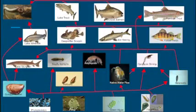This is our lake biome's food web, based off of Lake Superior's ecosystem. The main producers in our food web are the phytoplankton, flagellates, and green algae. Very small animals like the quagga mussels, mollusks, and calanoids eat these producers.